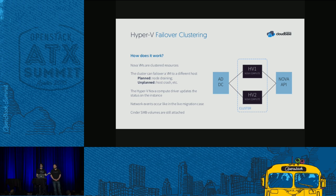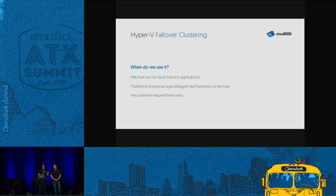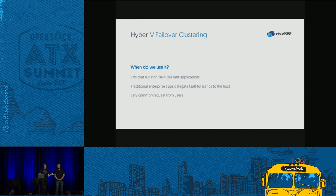Hyper-V failover clustering supports all networking options — Open vSwitch or native Windows Server/Hyper-V networking — and also supports Cinder SMB volumes, so all your volumes remain attached to your machines. Use it when your VMs run traditional enterprise apps that delegate fault tolerance to the host. We have a blog post published this week on our website if you want to learn more.